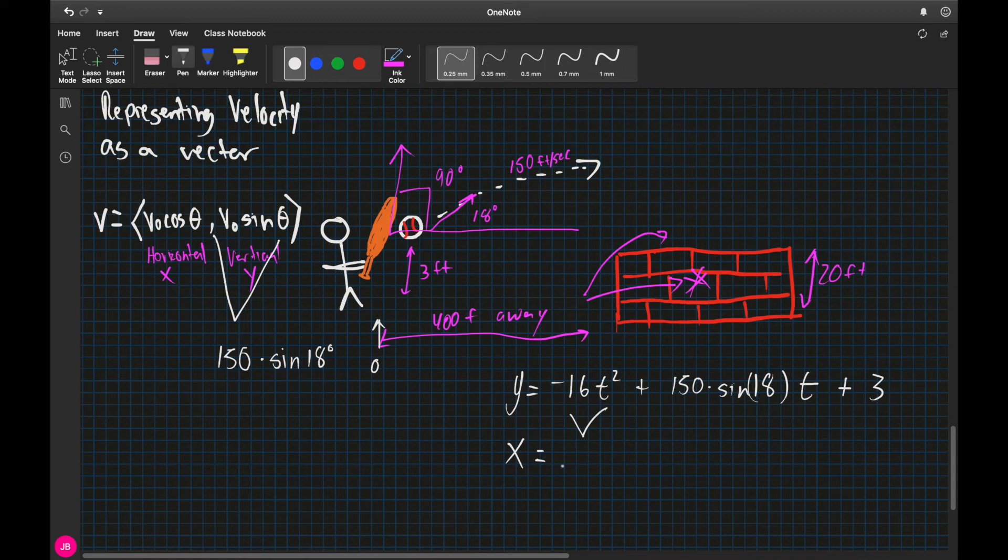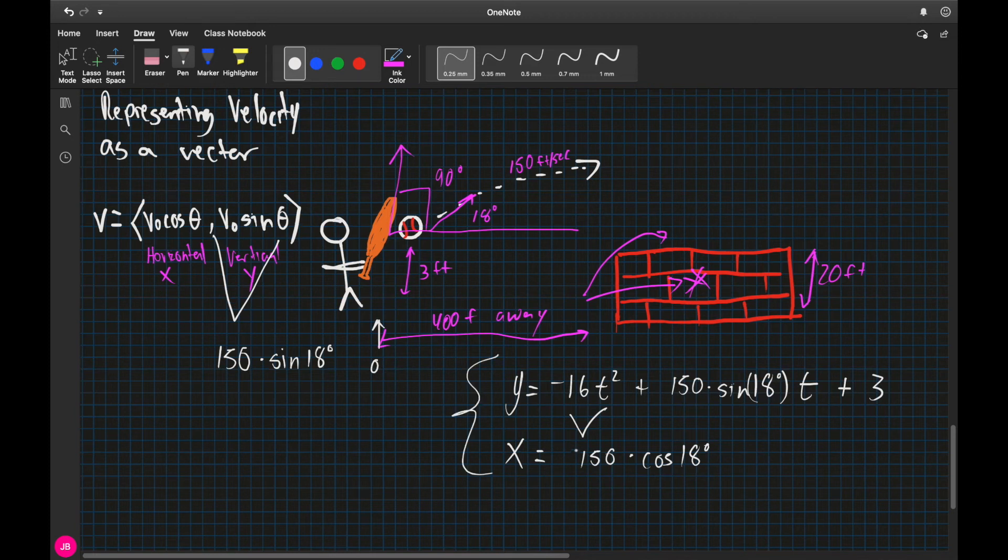So, the only thing to take into account for x is 150 times the cosine of 18 degrees. And since this is going to be a value in terms of time, we're going to take the 150 times the cosine of 18 degrees and multiply it times t, which is going to be our time in seconds.